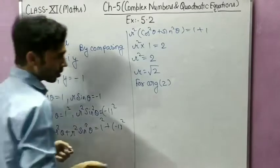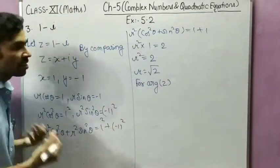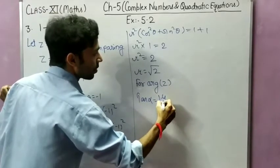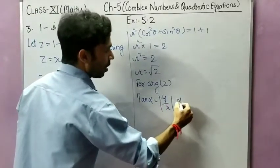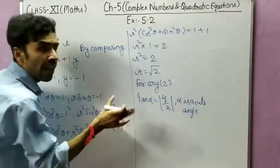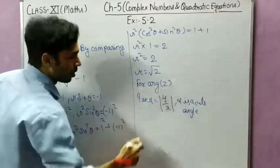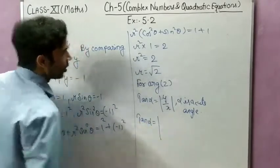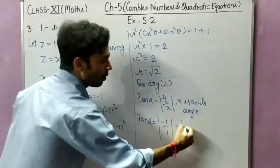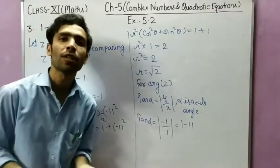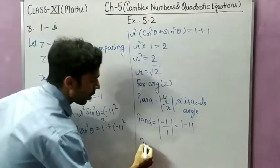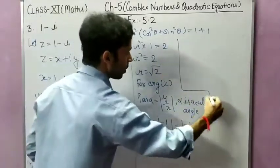For finding theta, which is also known as argument of z, we first find tan alpha equal to mod of y by x, where alpha is the acute angle. Here y is minus 1 and x is 1, so tan alpha equals mod of minus 1 by 1, which equals 1. The mod of any negative number is always positive, so mod of minus 1 equals 1. Therefore tan alpha equals 1.